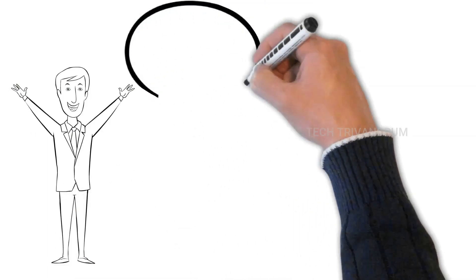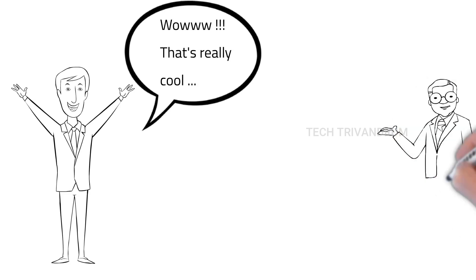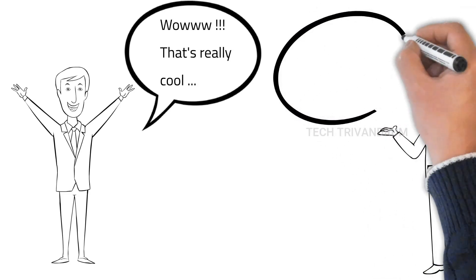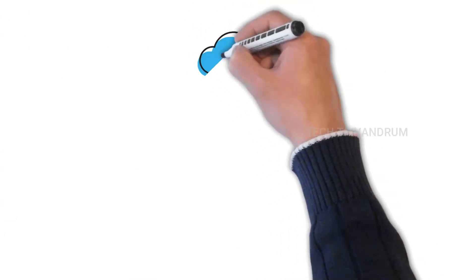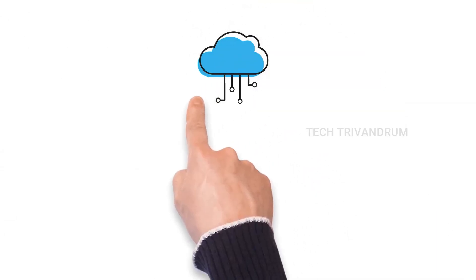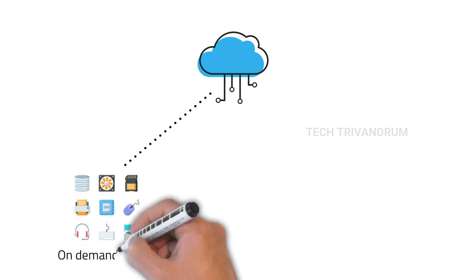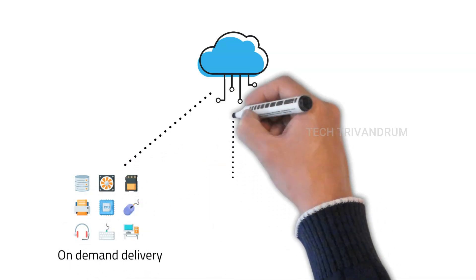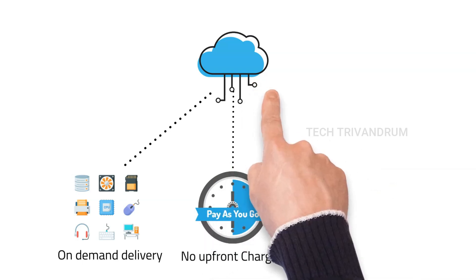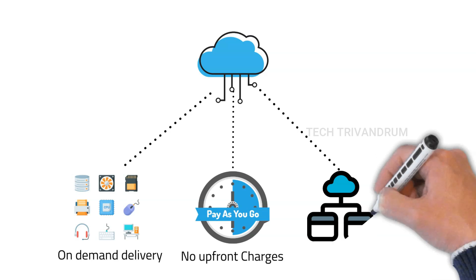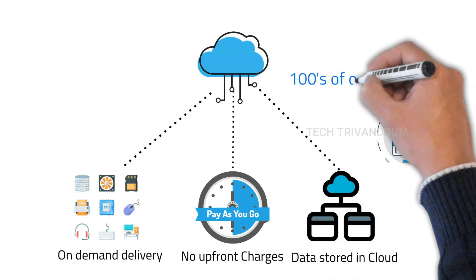Adam became really happy and excited after knowing the details about cloud computing, and Jeff was willing to explain some more details. The main features of the cloud computing model are the on-demand delivery of IT resources, no upfront fees, all data stored in the cloud, and usually a cloud vendor provides hundreds of other services that we can use in different environments.